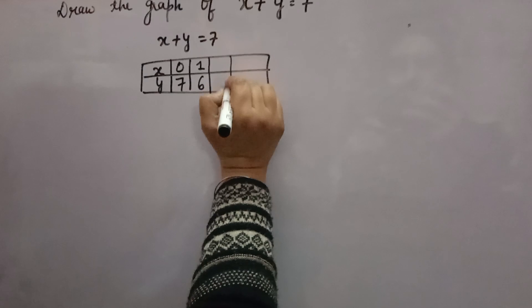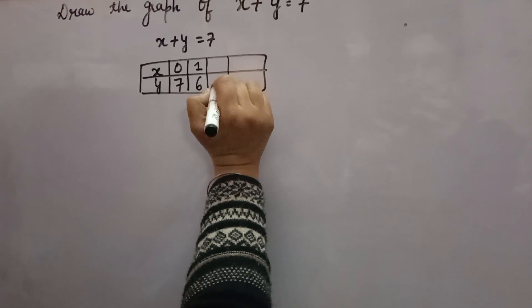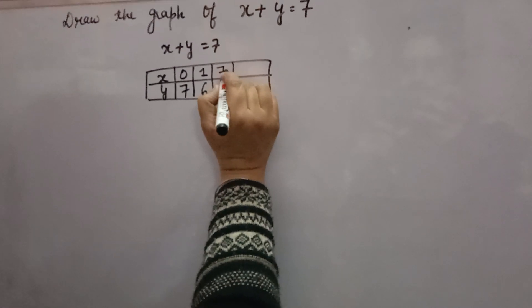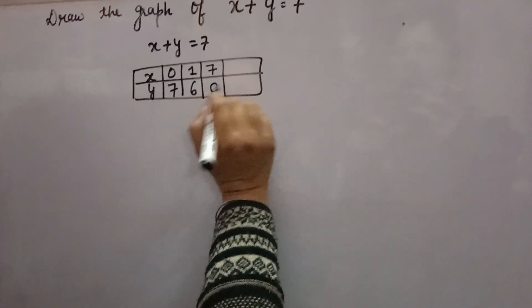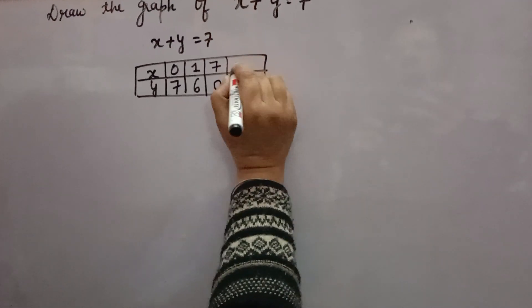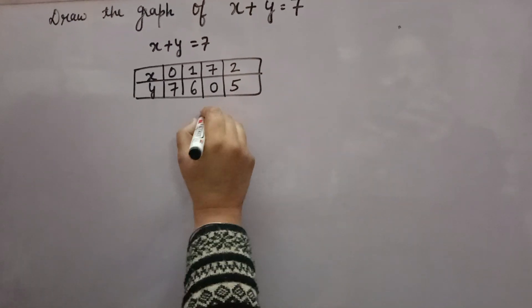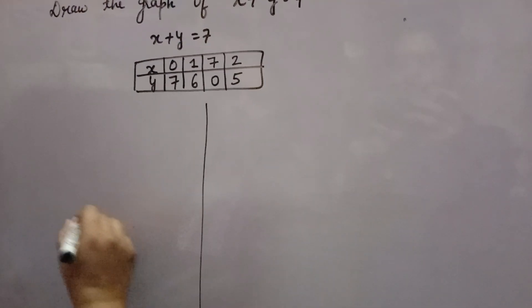Suppose y is 0, so x plus 0 equals 7, and x will be 7. Like this, you can take any 3 or 4 values. If x is 2, y will be 7 minus 2, which is 5. Three points are sufficient, or you can take 4.